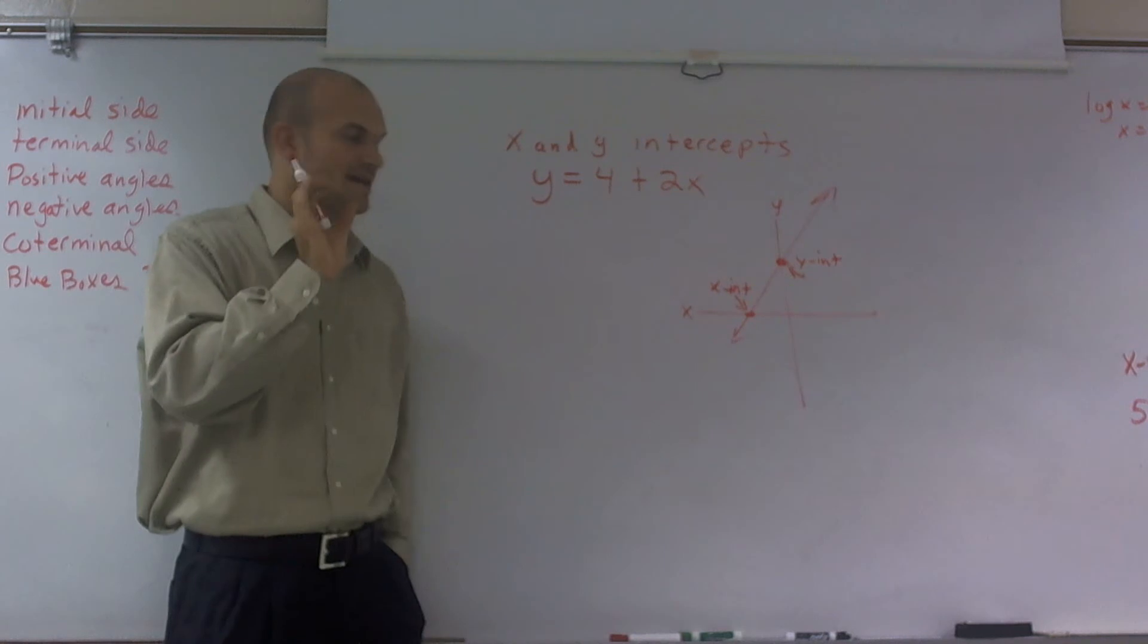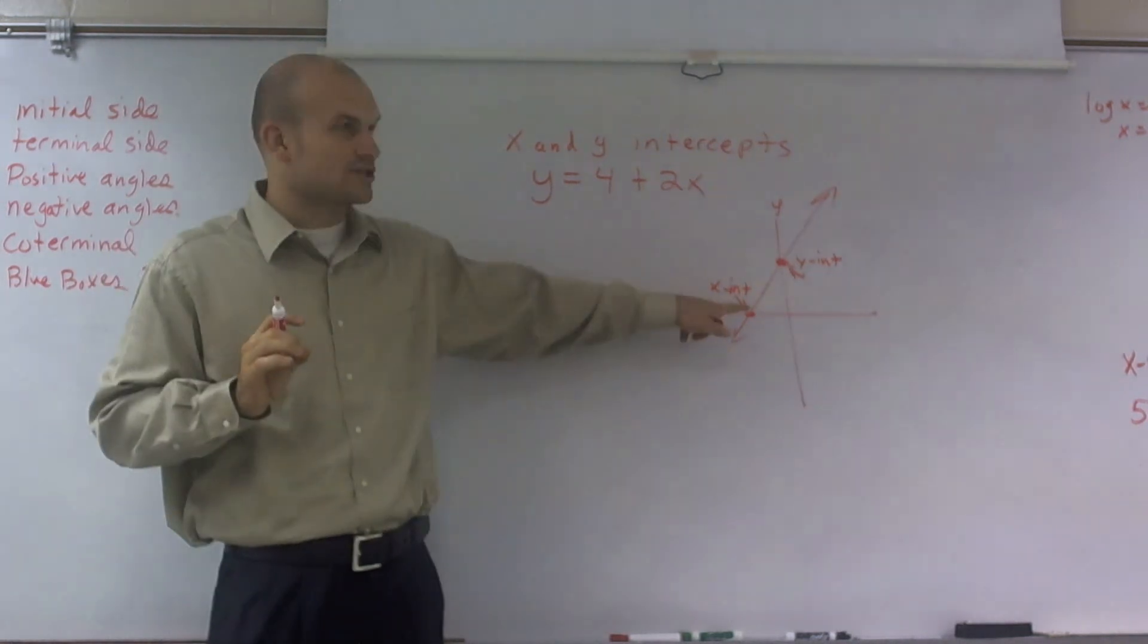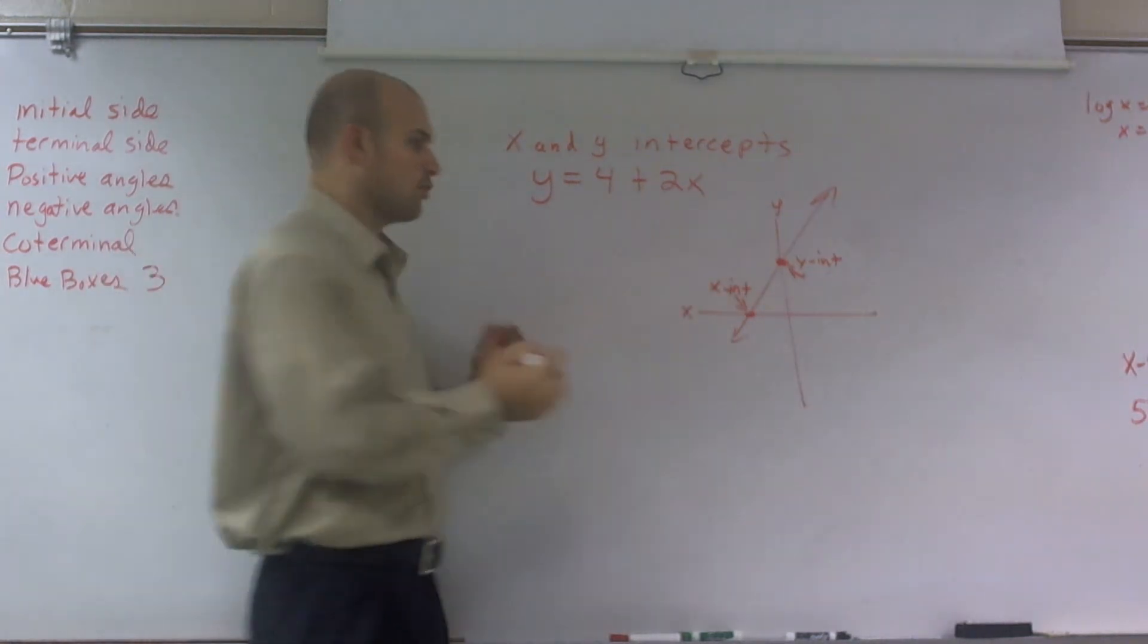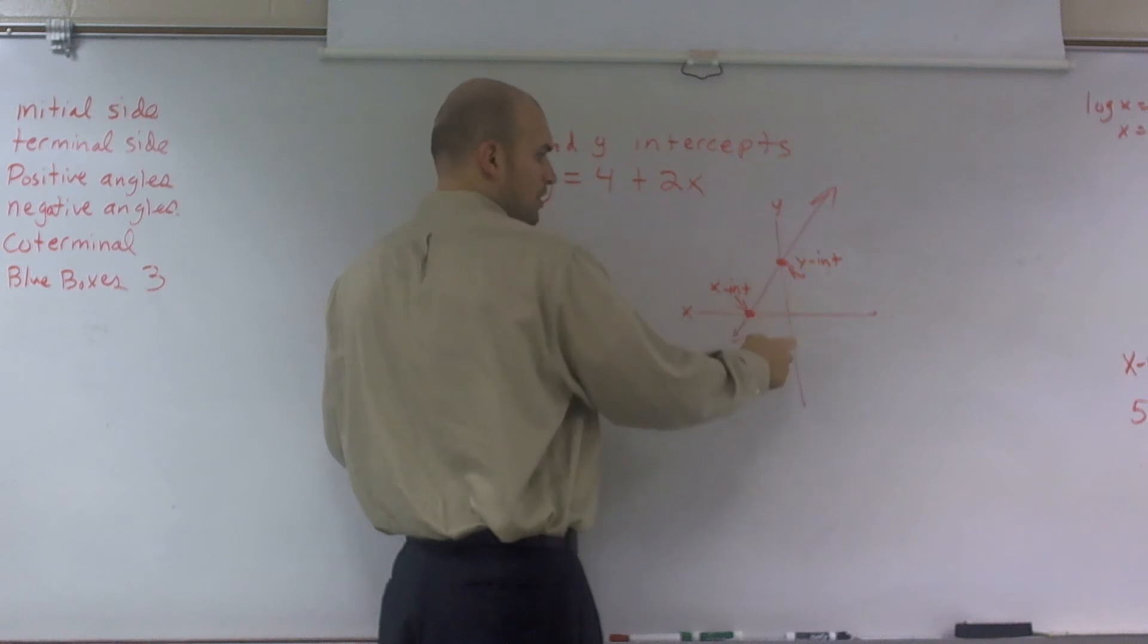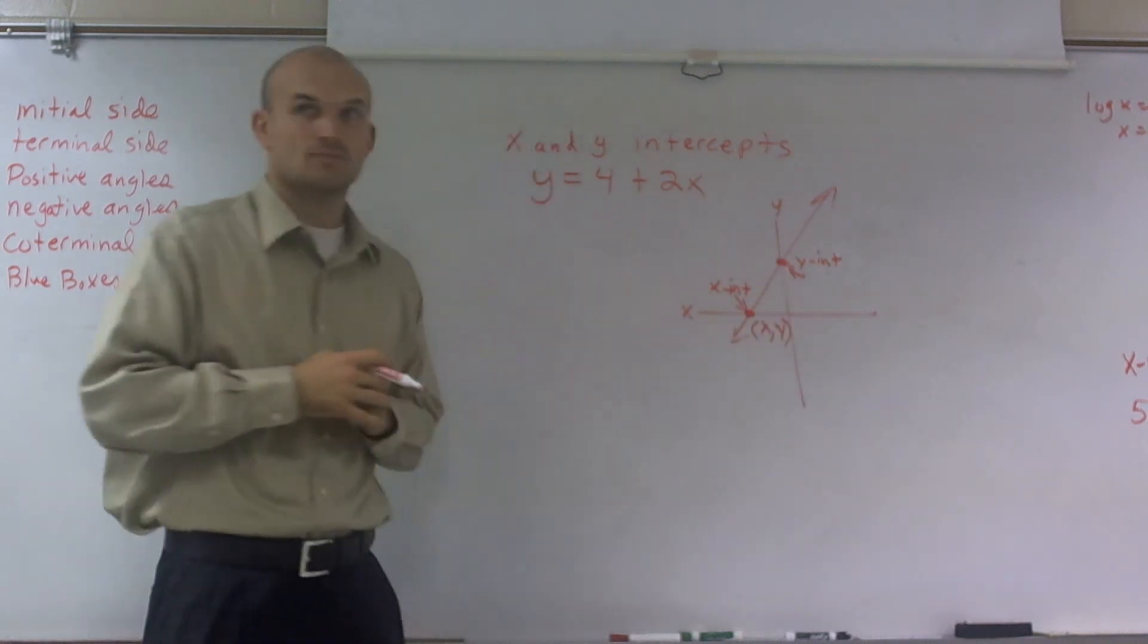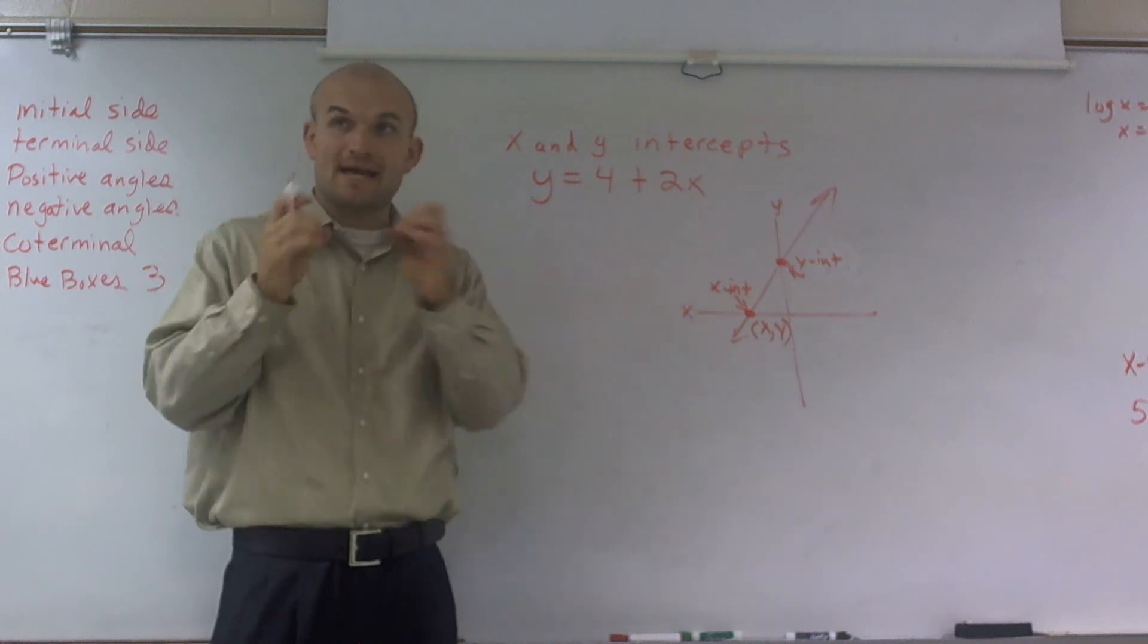So therefore, there's a couple things you guys need to make sure that's really important. At the x-intercept, remember, a coordinate point has an x and a y. An x-coordinate and a y-coordinate make up a coordinate point.